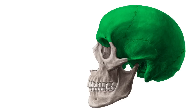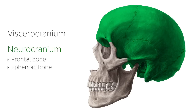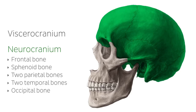Anatomically and developmentally, they are known as the viscerocranium, which is the facial skeleton, and the neurocranium, which is made up of the frontal bone, the sphenoid bone, the two parietal bones, the two temporal bones, and the occipital bone. This tutorial will highlight the key points of the neurocranium and elaborate on the bones and adjacent anatomical structures which surround it.